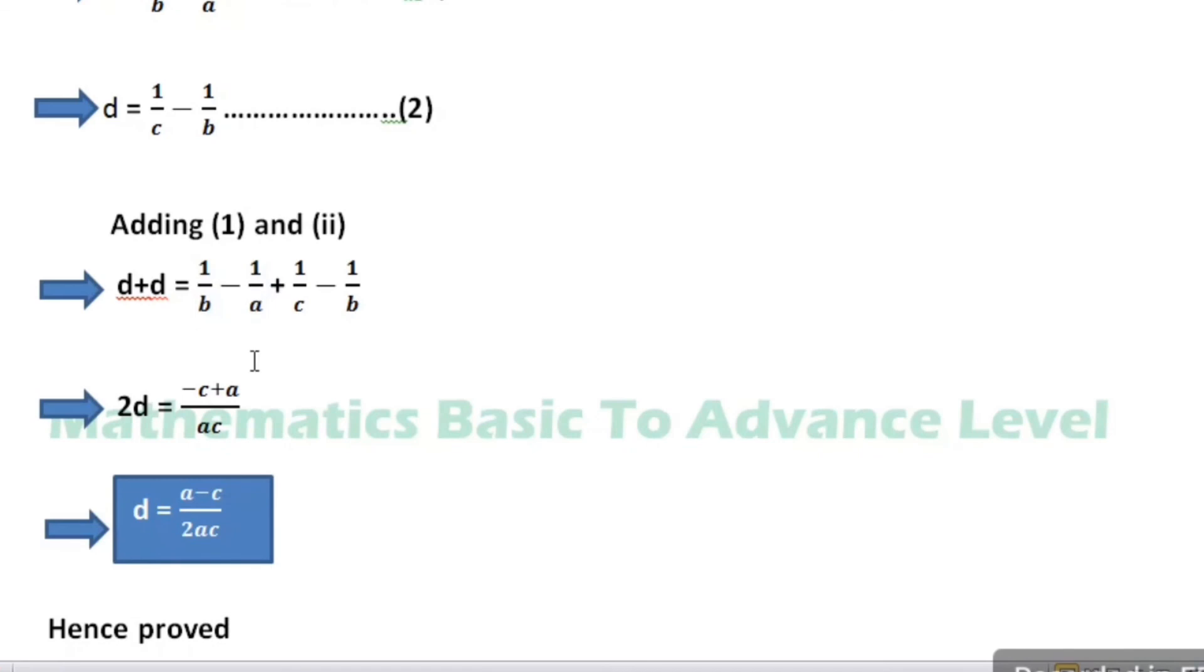Plus 1 divided by c, when denominator c cancels, a comes in numerator form. So we get minus c plus a divided by ac.